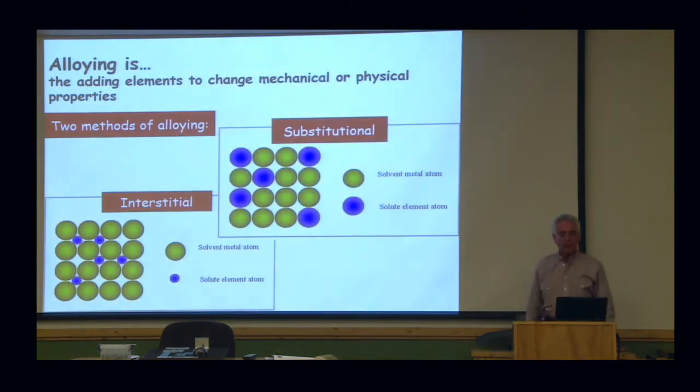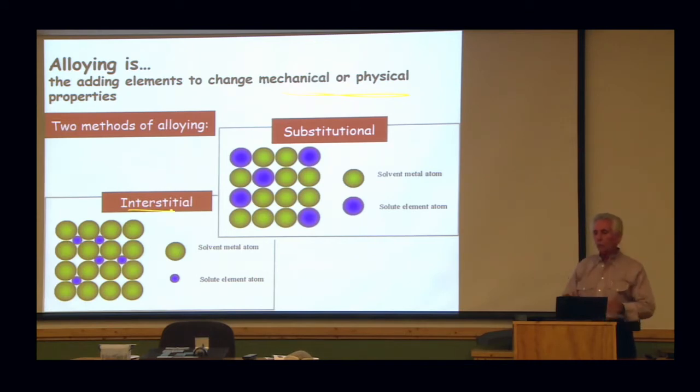Now, we've got alloy, and we add elements to change mechanical or physical properties, and we do it two different ways, or the alloying folks do it two different ways. Interstitial is where we will sneak in some ingredients between the grains of the iron. Like atom can be interstitially alloying steel up to 0.03%. And then we can take one of them iron ones out and put a nickel one in. That's called substitution.